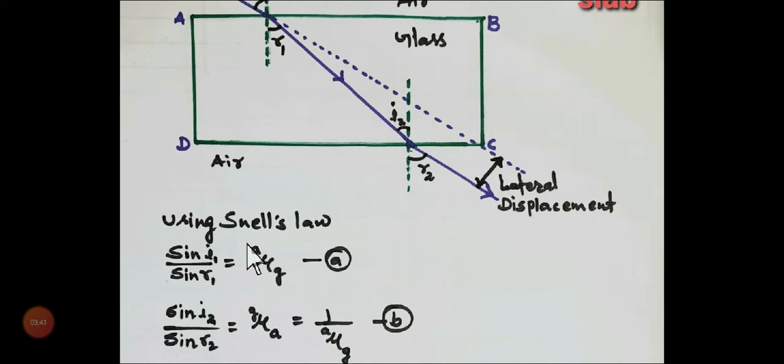This is the refractive index of glass with respect to air. When we reach the other interface, that is DC, sin i2 by sin r2, that is equal to mu a, the refractive index of air. Because after this the ray has entered into air.